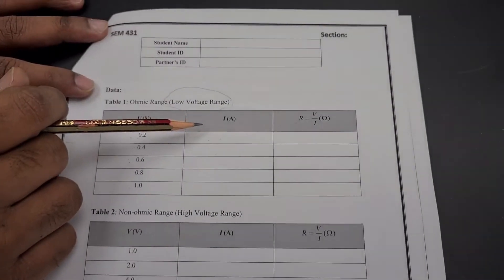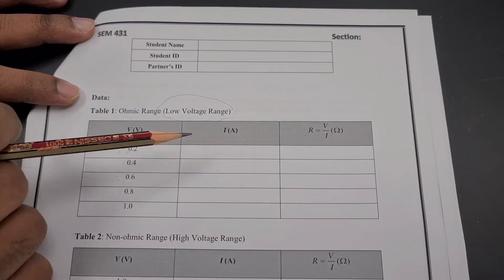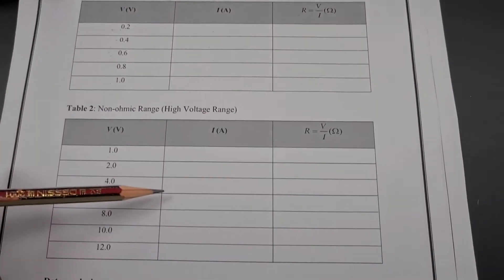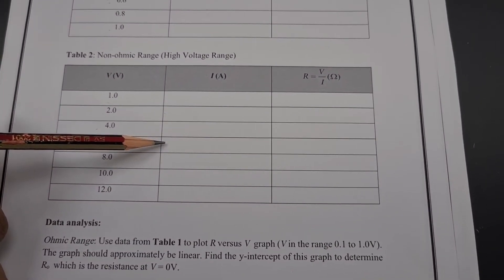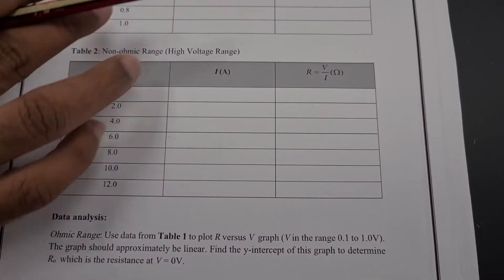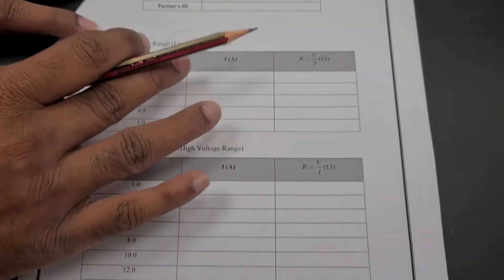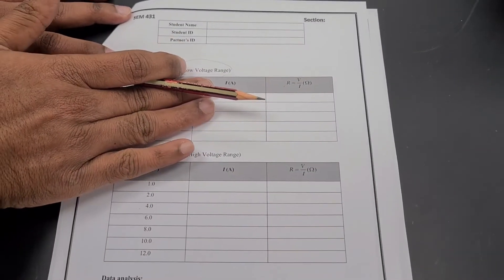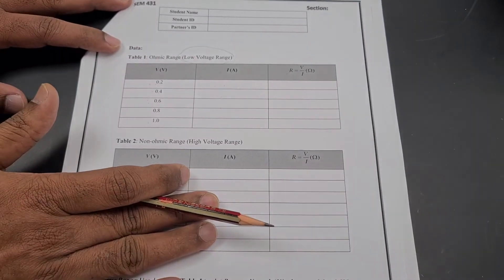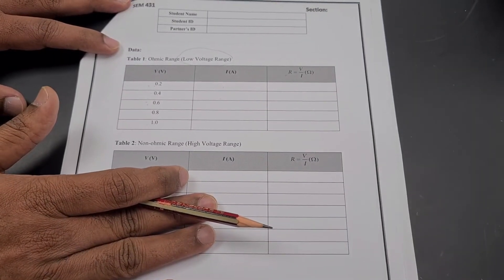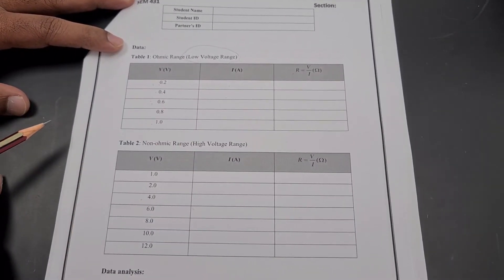By using the first table, we are going to get the value of R₀. By using the second table, we are going to get the value of R from the graph. I am going to explain two readings — one reading for the first table and one for the second table — and after that I will explain the graphical part.